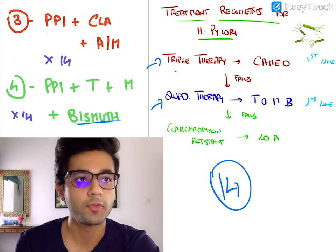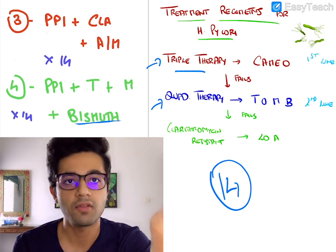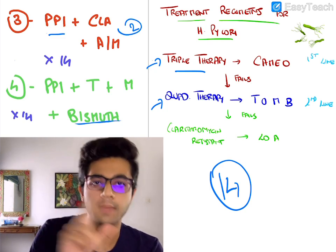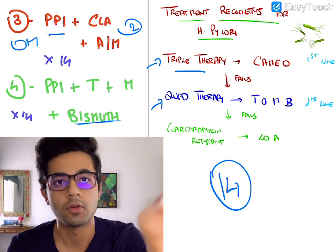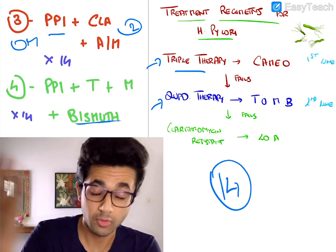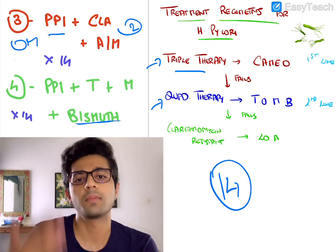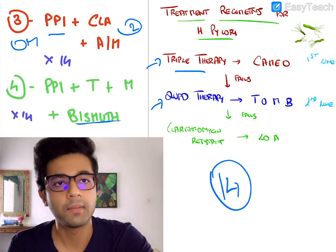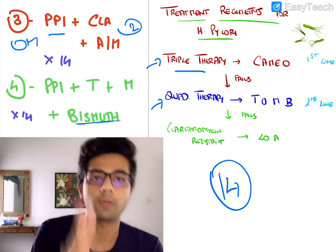So firstly, let's talk about the triple therapy regimen. The triple therapy regimen consists of one PPI and two antibiotics. The commonly used PPI, or proton pump inhibitor, is omeprazole. Lansoprazole and S-omeprazole may also be used, but omeprazole is the popular one.